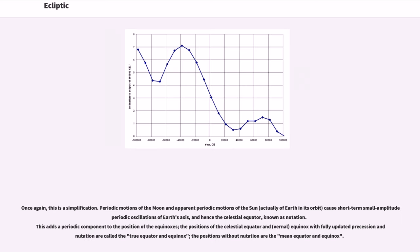Once again, this is a simplification. Periodic motions of the Moon and apparent periodic motions of the Sun, actually of Earth in its orbit, cause short-term small amplitude periodic oscillations of Earth's axis, and hence the celestial equator, known as nutation. This adds a periodic component to the position of the equinoxes, the positions of the celestial equator and vernal equinox with fully updated precession and nutation are called the true equator and equinox. The positions without nutation are the mean equator and equinox.